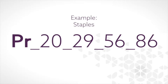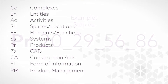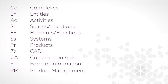The first two characters for each table are the actual description of the table themselves. So CO, for example, is the complexes table, SL is the spaces location table, and PR is the products table. These characters are always alpha.